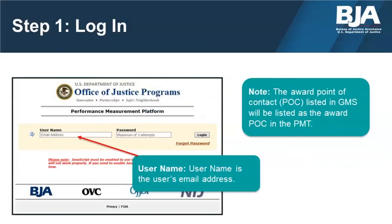To access the Performance Measurement Tool, visit the PMT's single sign-on page at ojpsso.ojp.gov. The single sign-on page allows grant recipients with multiple awards from the Office of Justice Programs to access all of their awards using one username and password. For example, if your organization receives funding from both BJA and the Office of Victims of Crime, you can log in with one username and password and access reporting for both awards. You must be a BJA grantee or subrecipient whose prime grantee has given you access to set up a username and password, and all individual users must have their own unique credentials.